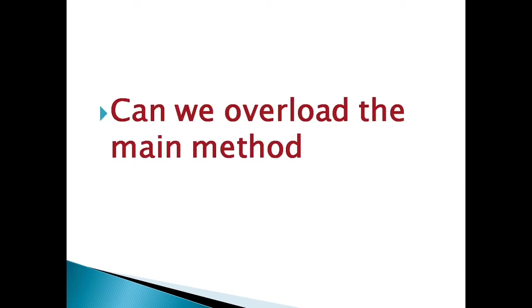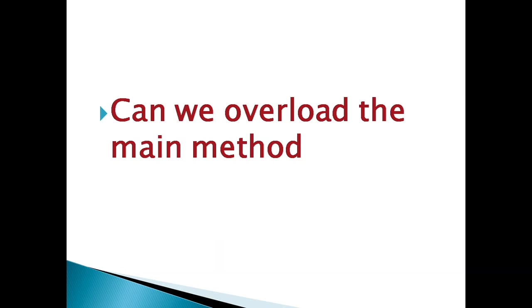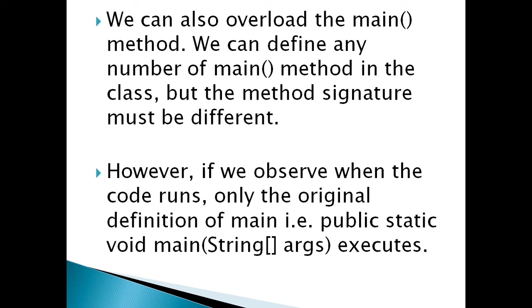Can we overload the main method? Yes, that is also a most frequently asked interview question. We can define any number of main methods in the class, but the method signature must be different — that is overloading. However, when the code runs, only the original definition of main, that is public static void main(String[]), will execute. JVM identifies and executes only the main method which passes an array of Strings as arguments.